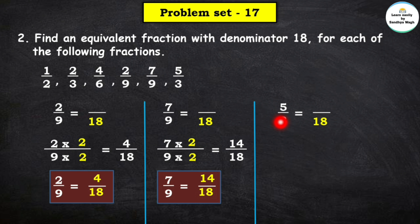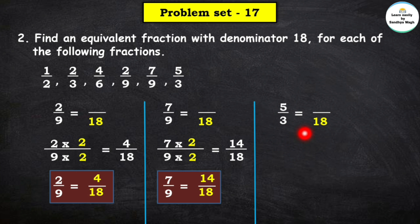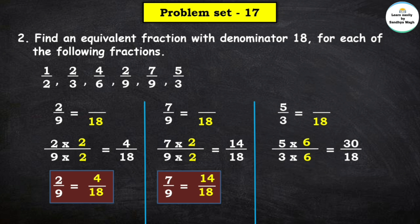Next fraction given is 5 upon 3. We have to find an equivalent fraction with denominator 18. We need to find what number multiplied by 3 gives 18: 3 × 6 = 18. So we multiply both numerator 5 and denominator 3 by 6: 5 × 6 = 30 and 3 × 6 = 18. So here the equivalent fraction of 5 upon 3 is 30 upon 18.